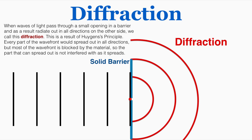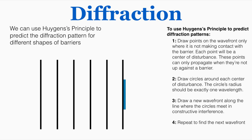We can use Huygens principle to predict the diffraction pattern for different shapes of barriers. To do this, we start by drawing points on the wavefront only where it is not making contact with the barrier. Each point will be a center of disturbance. These points can only propagate when they're not up against a barrier, so I'm only going to draw points where there is no barrier.